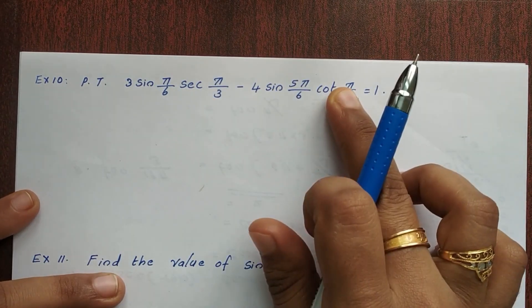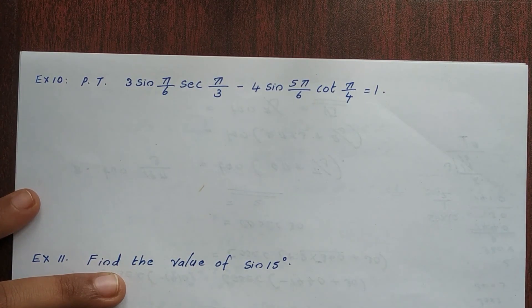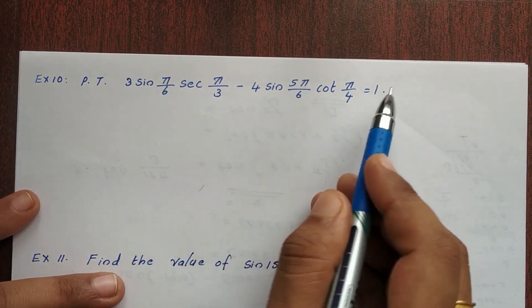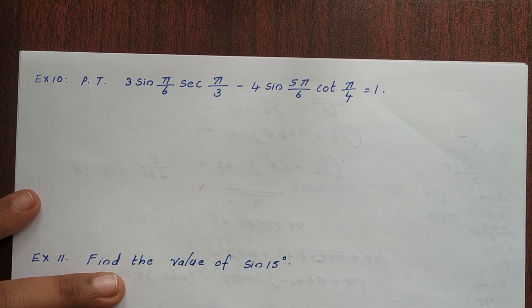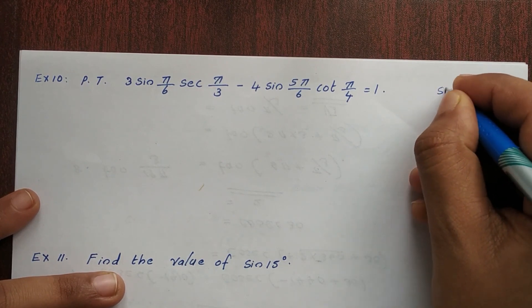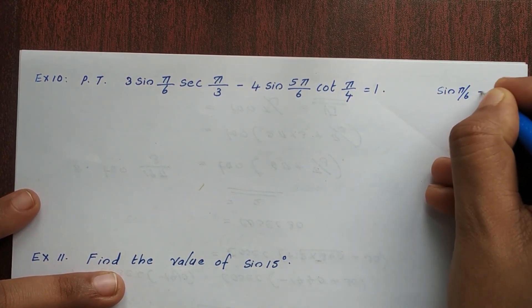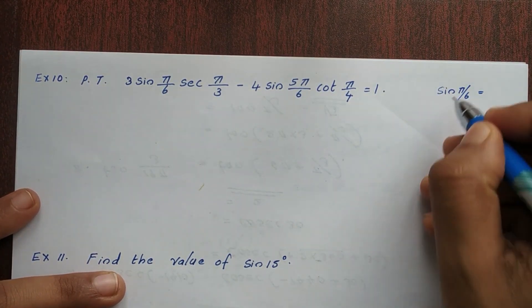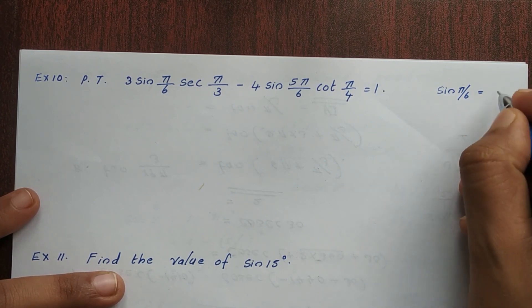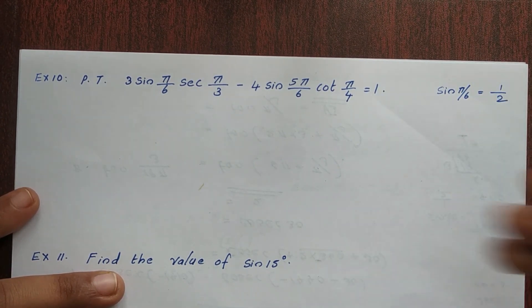Okay, the LHS is equal to 1. How to prove it. We have sin(π/6). π/6 is equal to 30 degrees, and sin(30) is 1/2.